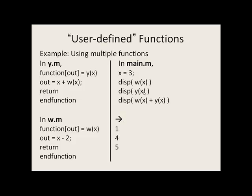Now let's calculate y of 3. The value 3 is passed to x in the function y. We have 3 plus w of x called again. x is 3, so we pass that value to x in the function w. We have 3 minus 2 is 1. That gets passed back up here to w of x, so 1. Remember that x is 3, so we have 3 plus 1 is 4. That gets passed back up to the main program and we display 4. So w of x is 1 and y of x is 4.